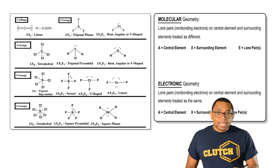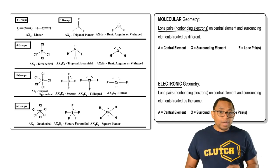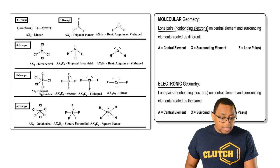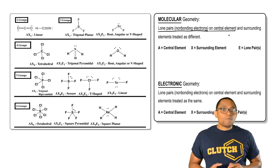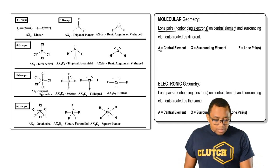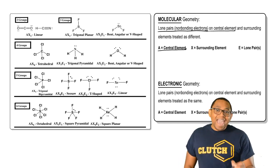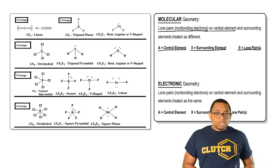When it comes to molecular geometry, lone pairs, which are non-bonding electrons on the central element, are counted as different from the surrounding elements. Our key here is A represents my central element, X represents my surrounding elements, and E represents the lone pairs on that central element.